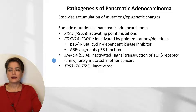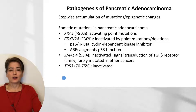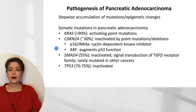SMAD4 is inactivated in about 55% of pancreatic adenocarcinomas. It plays a role in signal transduction of the TGF-beta receptor family. Because it is rarely mutated in other cancers, it can be a useful indicator of pancreatic adenocarcinoma, for example in cases of unknown primary. TP53 is inactivated in about 70–75% of these malignancies, and when combined with loss of ARF augmentation, TP53 plays a significant role.